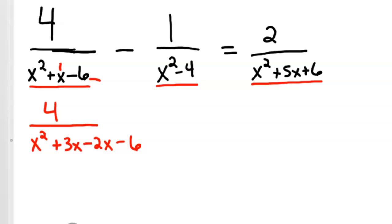I'm going to split this up into x squared plus 3x minus 2x minus 6. If you notice, 3x minus 2x is this 1x we want. Then I'm going to factor by grouping it.